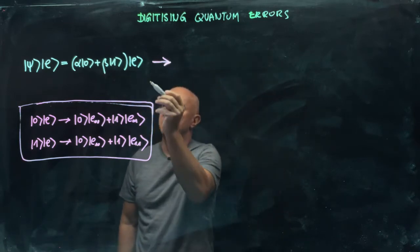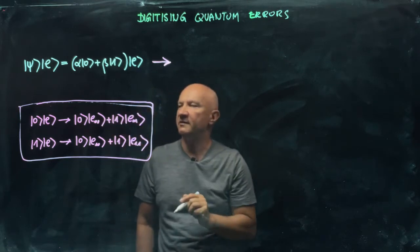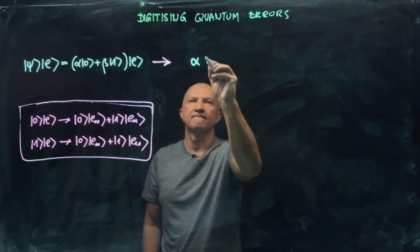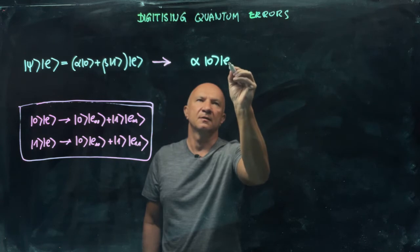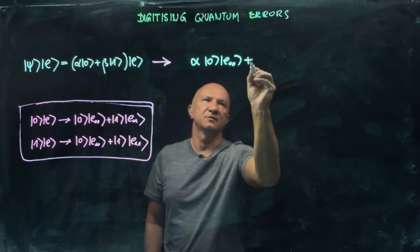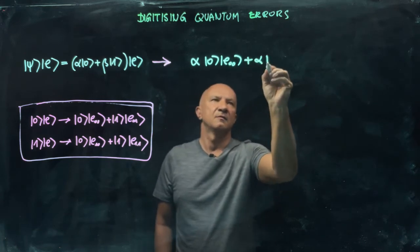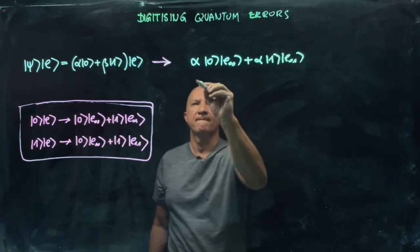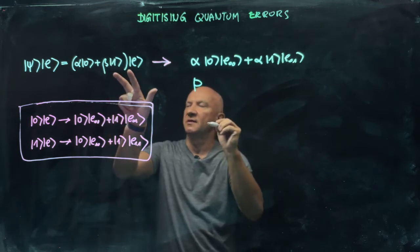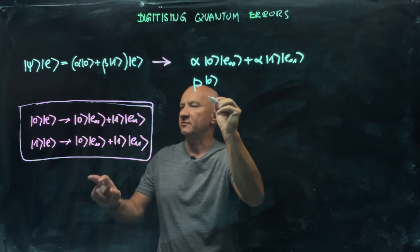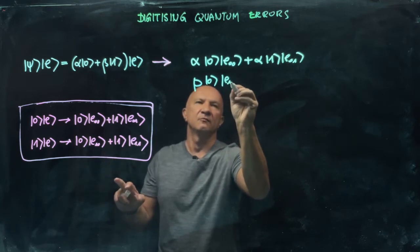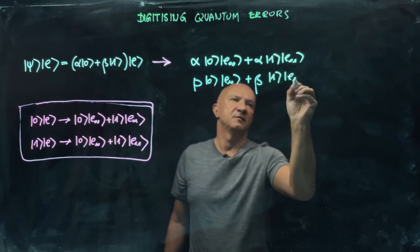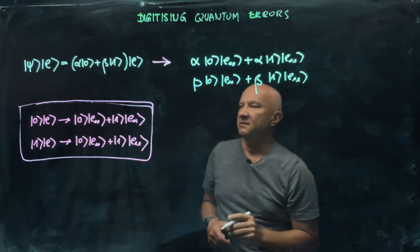Under this kind of decoherence, this will evolve to alpha|0⟩|E0⟩ plus beta|1⟩|E1⟩. Then I have terms with beta: beta|0⟩|E1⟩ plus beta|1⟩|E1⟩. That's kind of obvious.